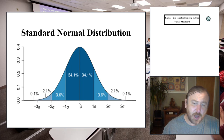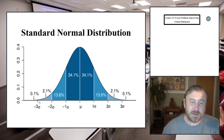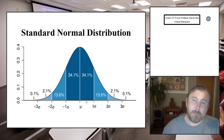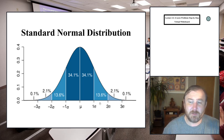Anything below the population mean is going to be a negative value, and anything above the population mean is going to be a positive value.